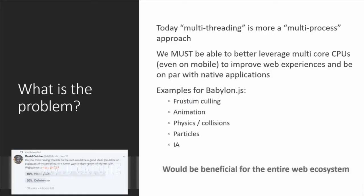Today we are doing multi-threading on the web in a very process-oriented way. Web workers are entirely separated from the main thread, and that's kind of a problem for me. It's tough to compete with real threading — tough to compete with native, with Unity, with Unreal, with all these native engines, because they can rely on more than one thread. It's a shame that on my Xeon computer when I run Babylon.js, out of 24 cores there is one that works. It's a problem for battery and for usage of all the power we have.